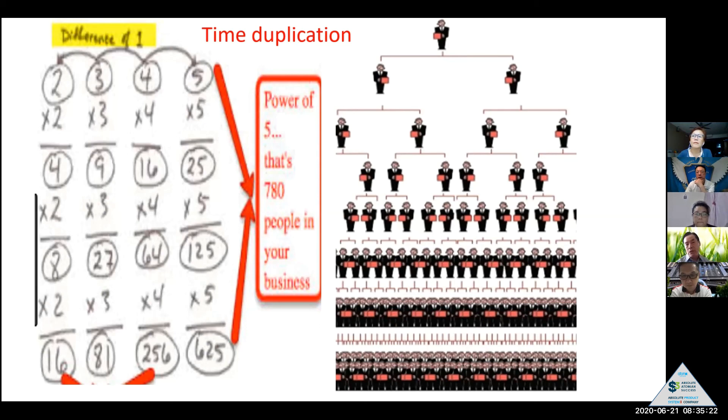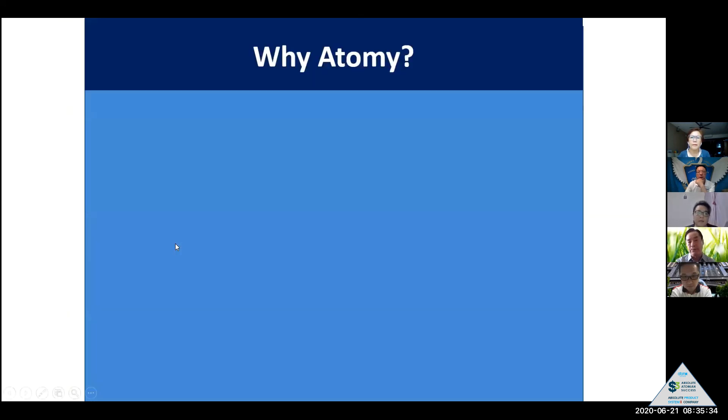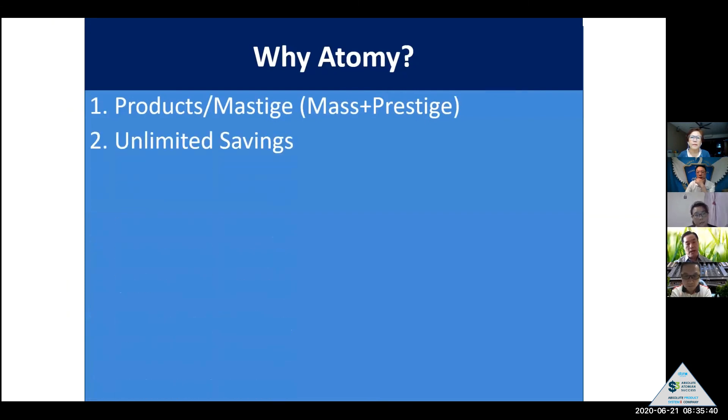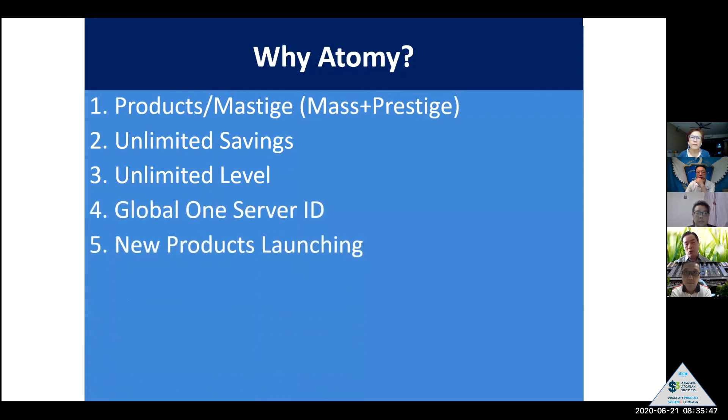But this time duplication theory in textbook is not working before. But Korea, Atomy, is absolute quality, absolute price. That it is working there. Why Atomy? Absolute quality, absolute price, unlimited saving and unlimited level, global ID, new product launching, second generation inheritance, and opportunity.